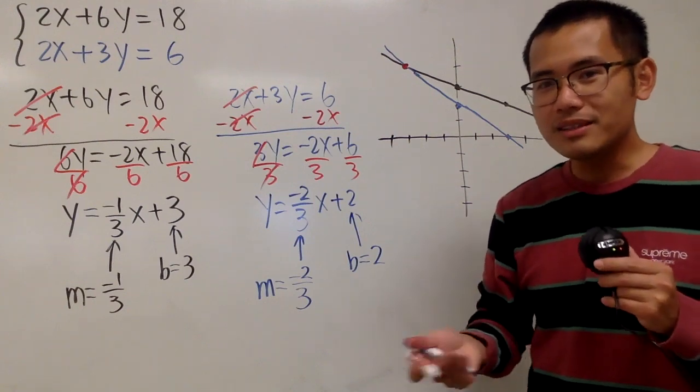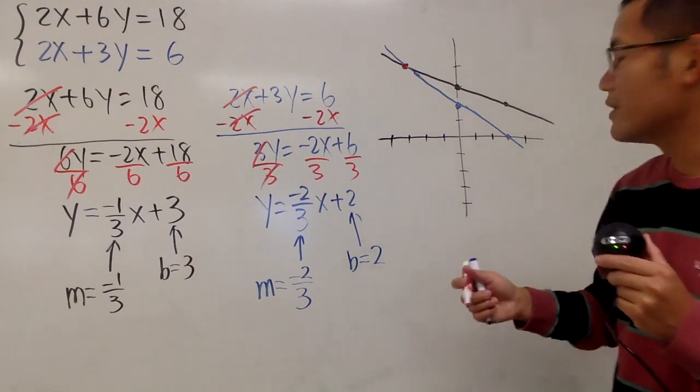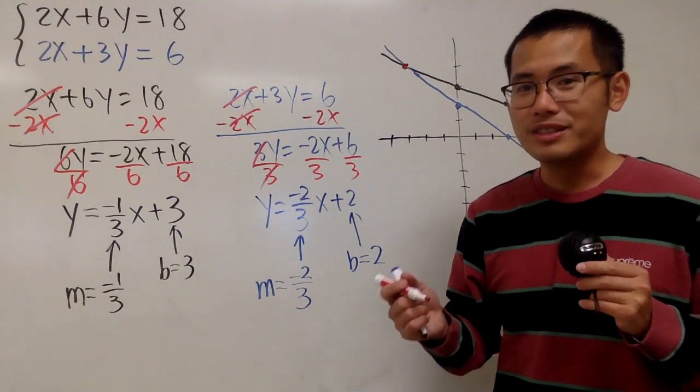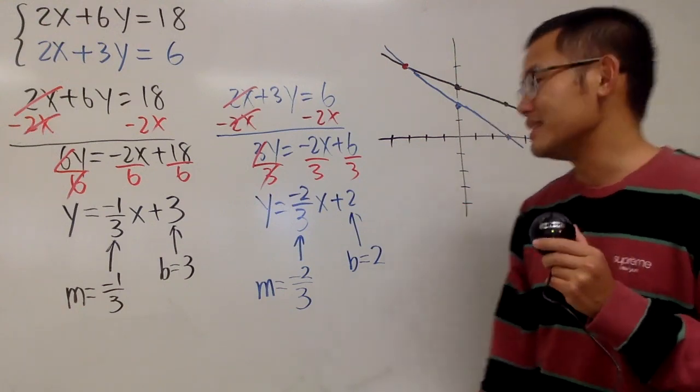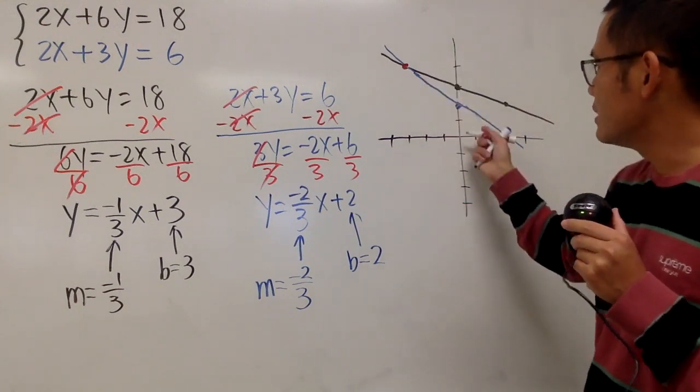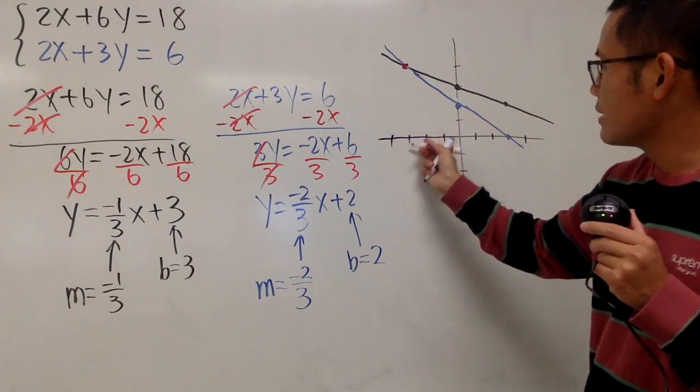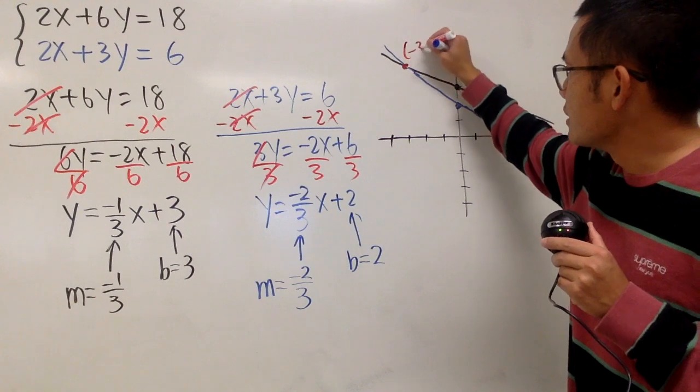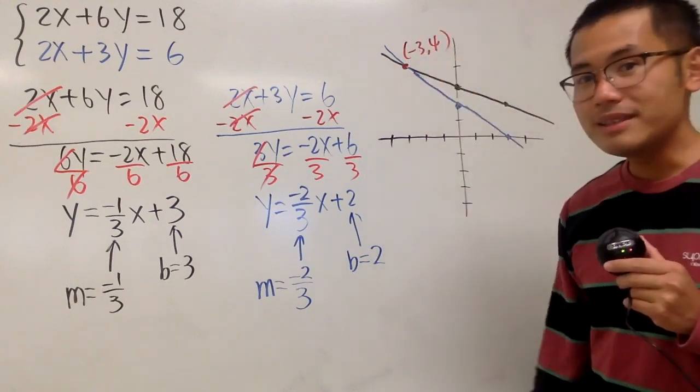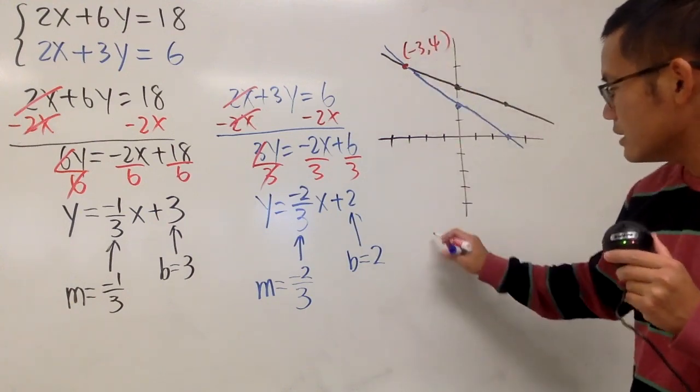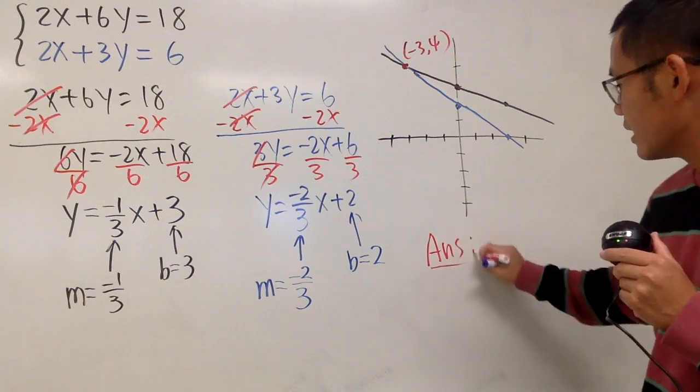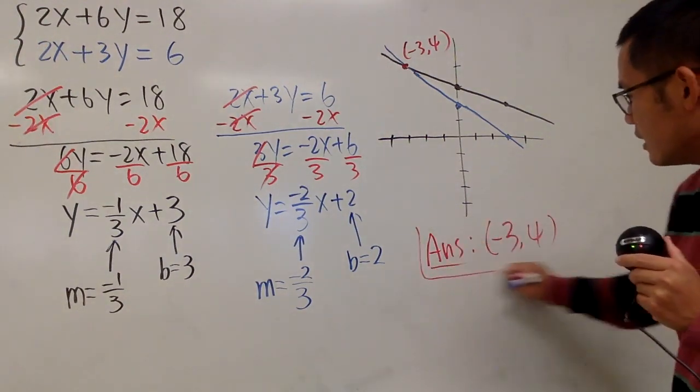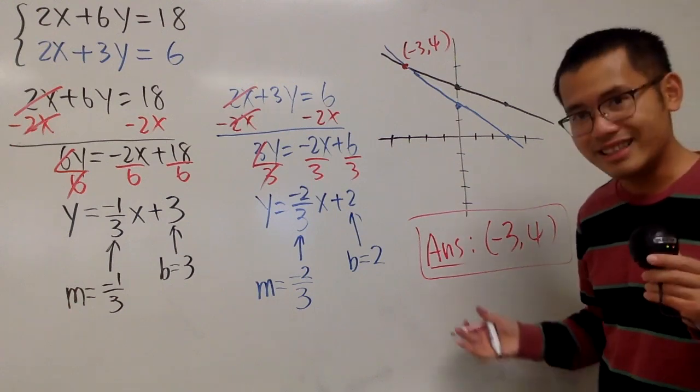And when I give you guys questions that you have to solve by graphing, I will always give you guys whole numbers. It will sound like numbers you can actually tell easily. So here, this point is, you see, negative 1, negative 2, negative 3. And then you go up 1, 2, 3, 4. So this point is actually negative 3, 4. Therefore, the answer to this is just, of course, that we have negative 3, 4. And this is it.